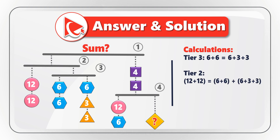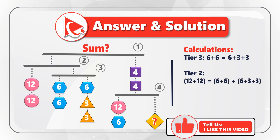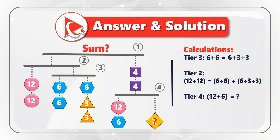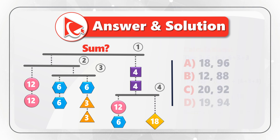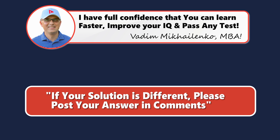Looking at tier 2: on the left we have two circles, each with value 12, totaling 24. On the right we have two circles totaling 24, plus the entire tier 3, which also equals 24 — keeping tier 2 in balance. Knowing this logic, we can calculate the missing value on tier 4. Because tier 4 must remain in balance, 12 plus 6 equals 18 — the missing value. The total sum is calculated as the sum of all numbers: tier 2 and tier 3 equal 24 plus 24, plus 48 on the right side of tier 1, equaling 96. The correct answer is choice A: 18 and 96. Please post your answer and solution in comments.